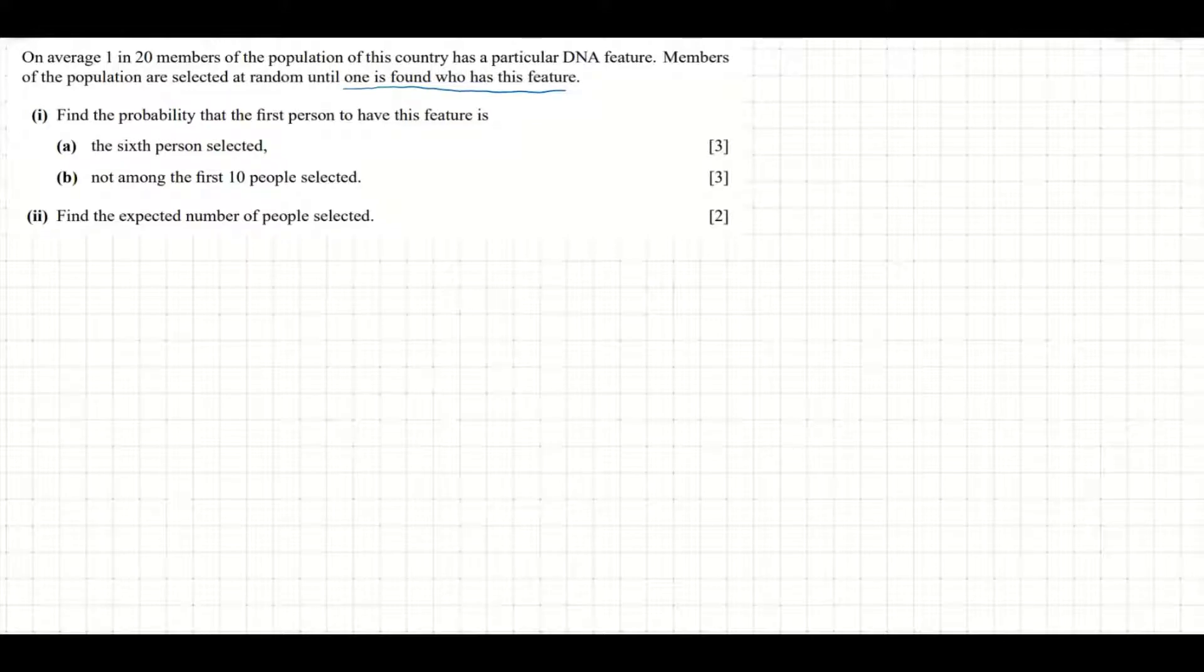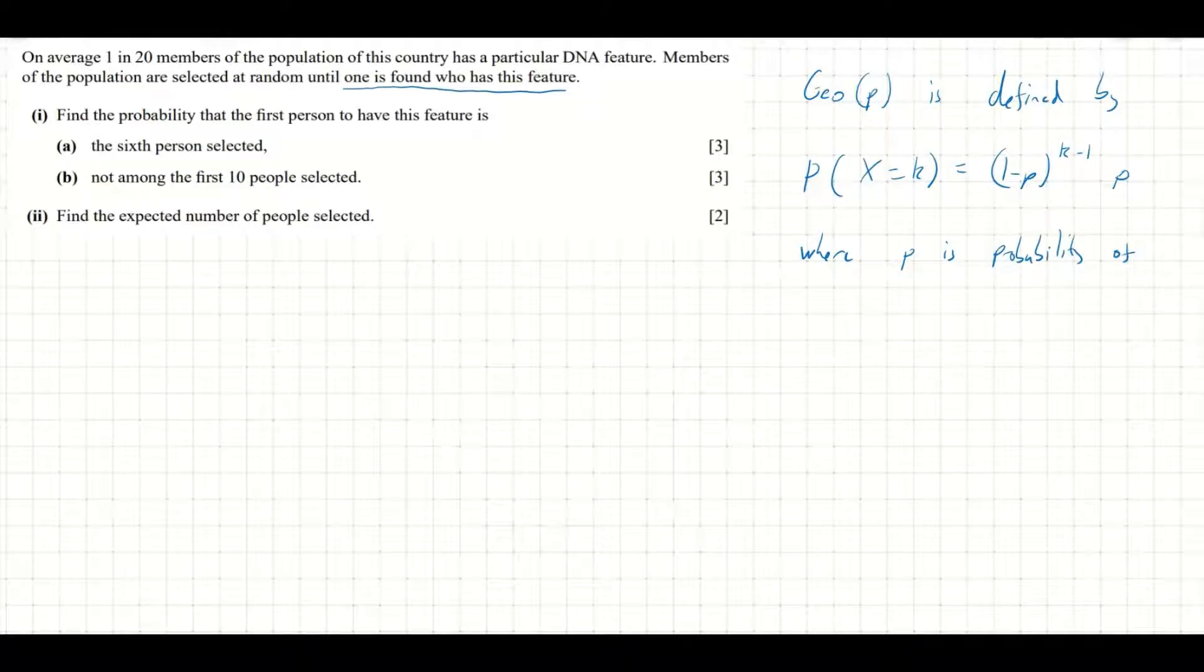So the geometric distribution, Geo(p), is defined by P(X=k) = (1-p)^(k-1) * p. And this is where p is the probability of an individual success, and X is the time of the first success. So this P(X=k) formula tells us the time of the first success.